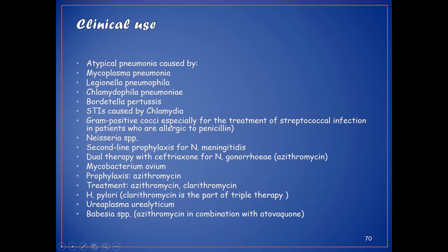For Neisseria species, macrolides serve as second-line prophylaxis for Neisseria meningitidis. Dual therapy with ceftriaxone for Neisseria gonorrhoeae, where azithromycin can be used. For Mycobacterium avium, azithromycin can be used as prophylaxis.